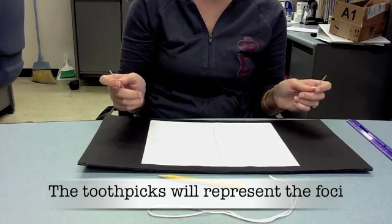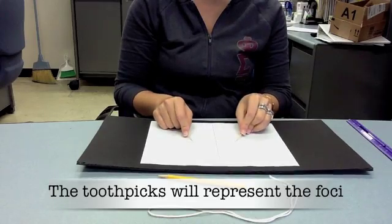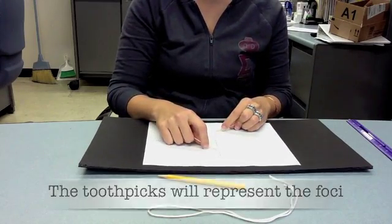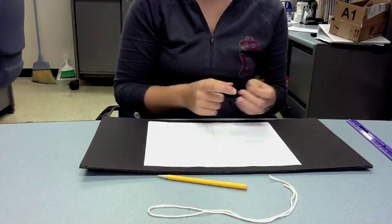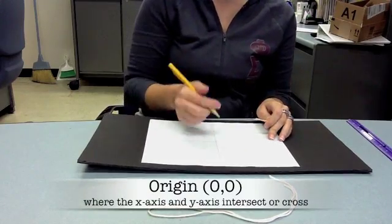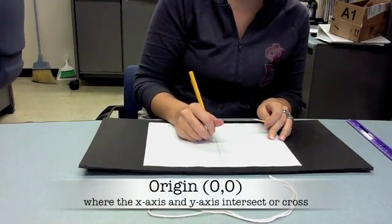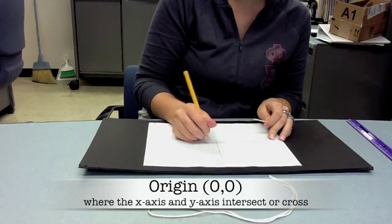I can place my focus points on the x-axis or the y-axis. I'm going to choose to do the x-axis. I want the center of my ellipse to be at the origin, which is 0,0, where the x and y-axis cross.